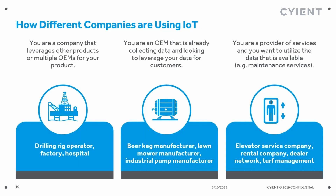In the last webinar we talked about three different model companies using IoT to take their products and services to the next level. It's important to come back to these three examples and think about how they might monetize their solution. These three different companies represent three different kinds of business models: a company that uses other OEMs' equipment in their solution, like an oil rig operator, a factory, or hospital; a company that's an OEM themselves, making their own products and integrating IoT technology; and a company whose focus is service and how they might integrate IoT into their service offering. Let's think about how these three kinds of companies might monetize that data and connectivity.